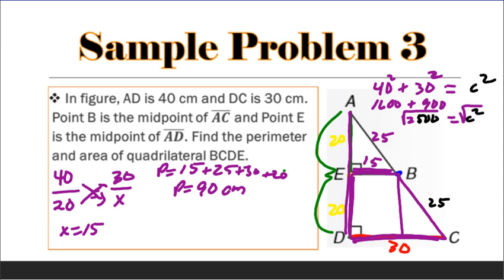And then to find the area, this would be 15 times 20. So 15 times 20 gives us 300. And then we're going to add, this is 20 times, this also has to be 15. Because the top part is 15 and this whole bottom is 30. So 15 times 20 is 300, divided by 2 gives us 150. We're going to add 150 here. That would give us an area of 450 square centimeters.